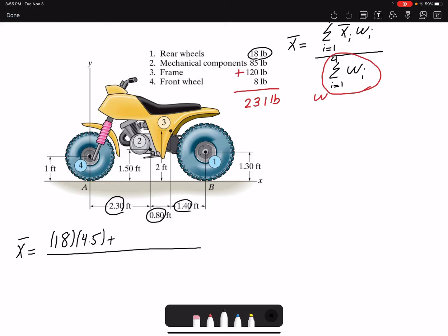Then the next component would be the mechanical components. The weight is 85. Then 2.3 would be the centroid. Similarly for frame, 3.1. And then at the end, front wheel, which we have the magnitude 8, but the centroid is 0. So this component is 0. And the denominator is 231 that we previously found. So X bar is 2.81 feet.